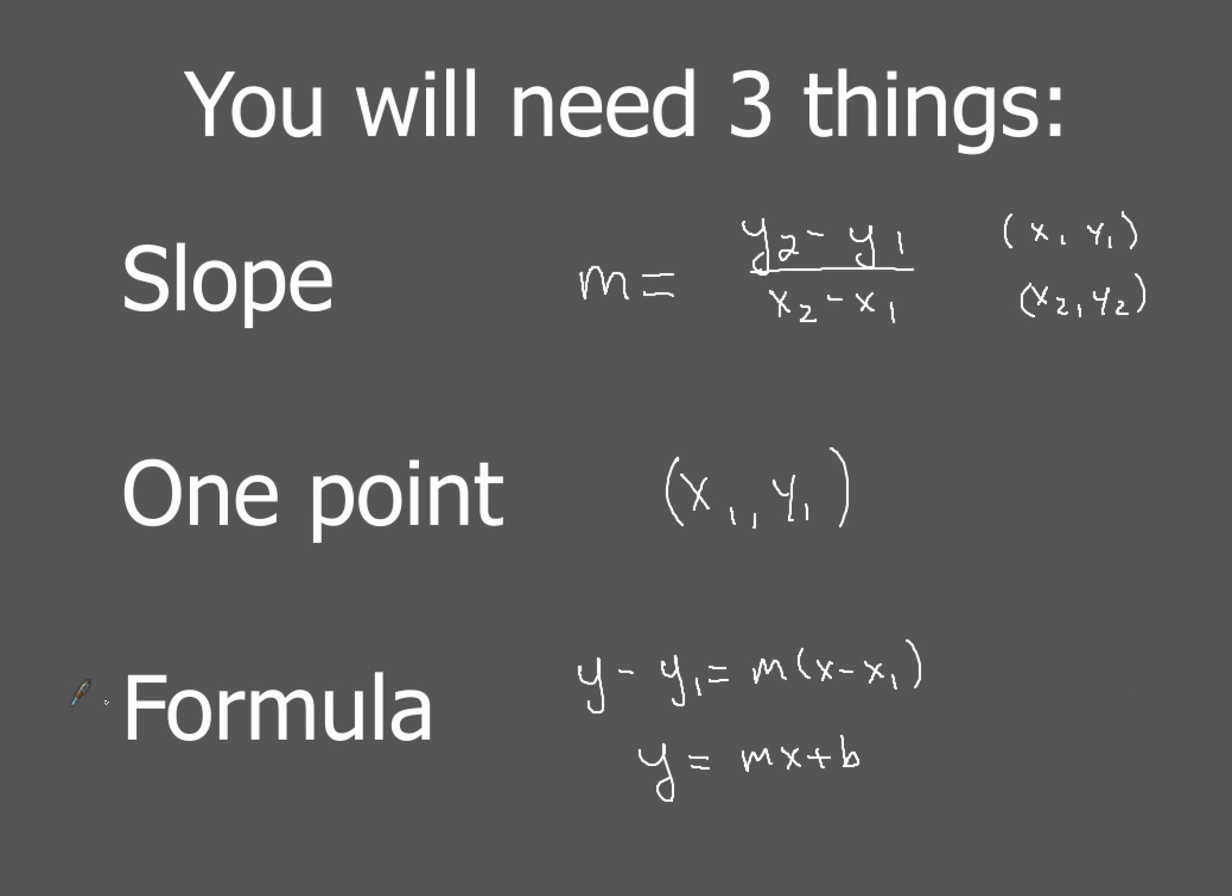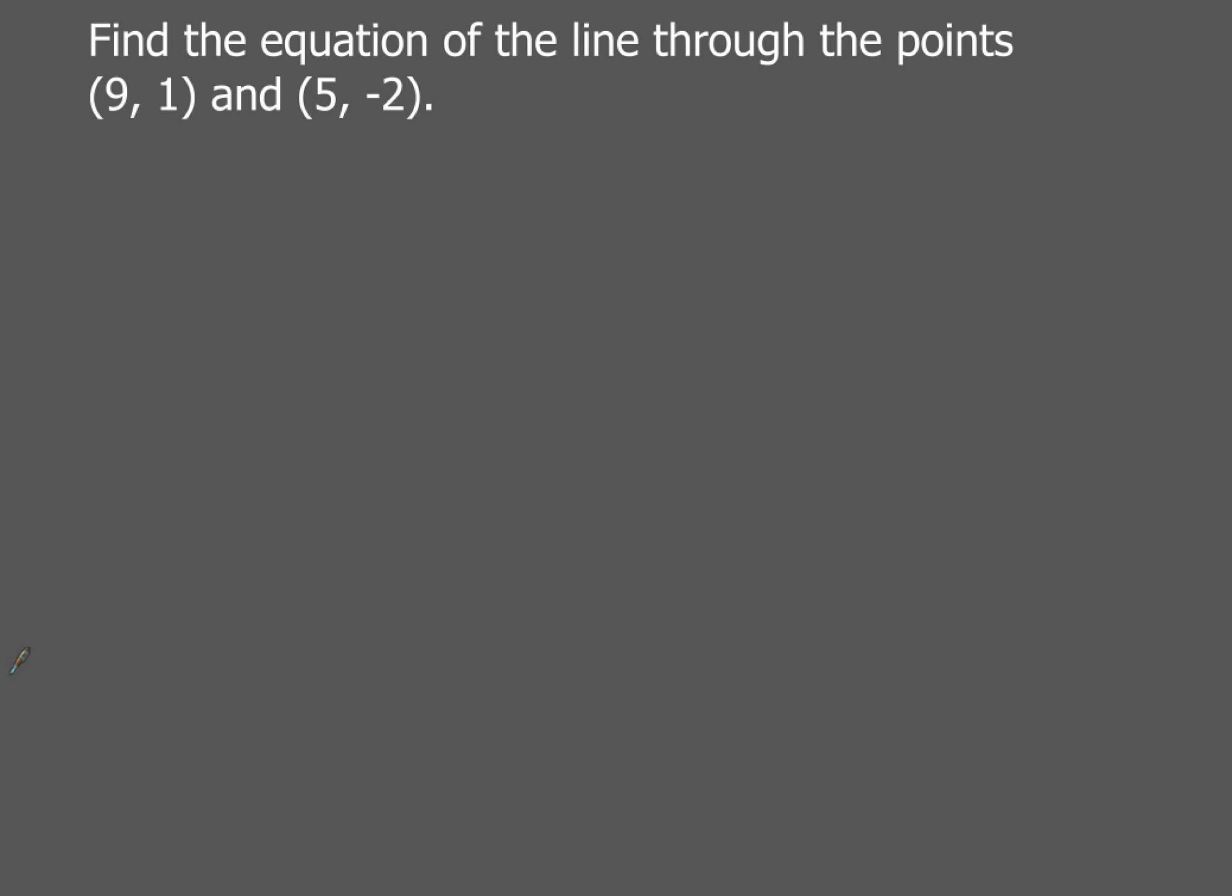So, let's go ahead and take a look at an example, and we'll go through this together. In this one, we're given the two points, 9, 1, and 5, negative 2. Find the equation of the line through those two points. So, the very first thing, we're going to figure out what the slope is.